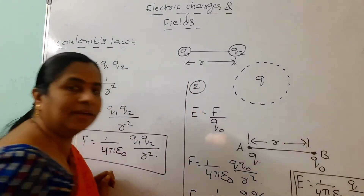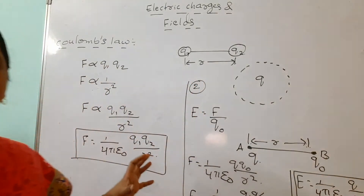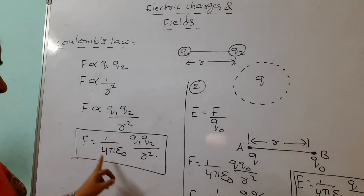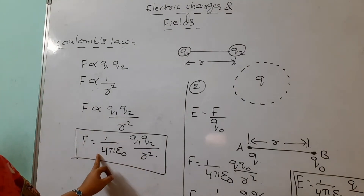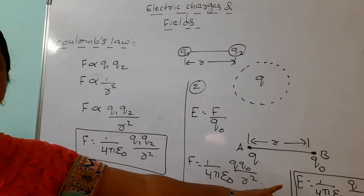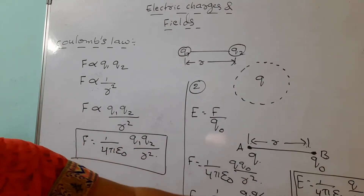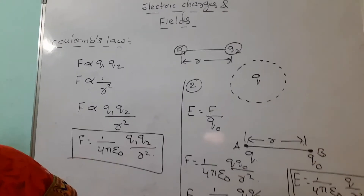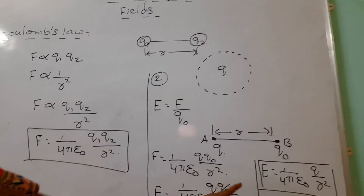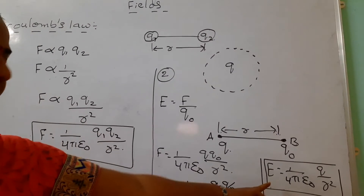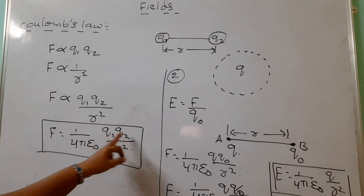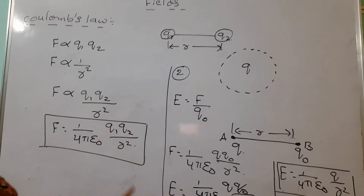This is our second SAQ — very simple. The key distinction is: don't confuse Coulomb's law with intensity due to a point charge. For intensity you get (1/4πε₀) × Q/R², whereas Coulomb's law gives Q1Q2/R².